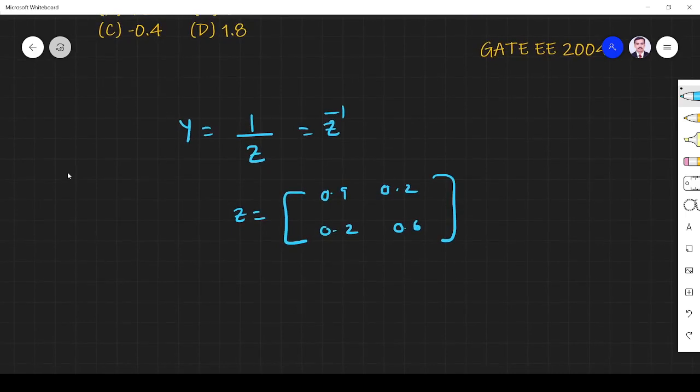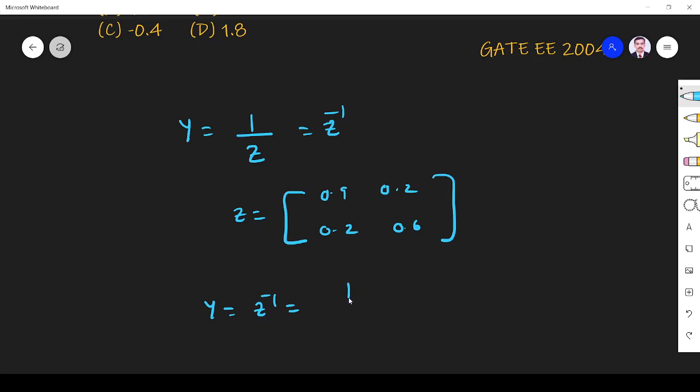First what I have to find? I have to find Z inverse. Y is equal to Z inverse. Z inverse I will find. First I find the matrix value 1 by mod E. So 0.9 into 0.6, 0.54, 0.2 into 0.2, 0.04.